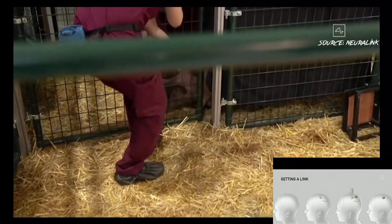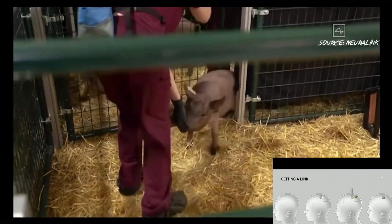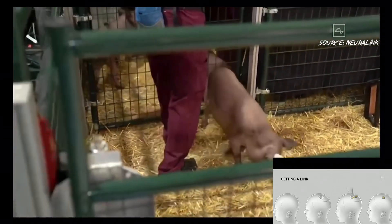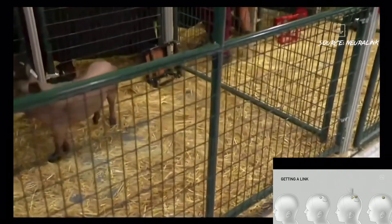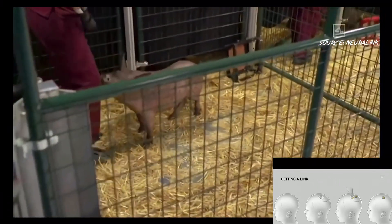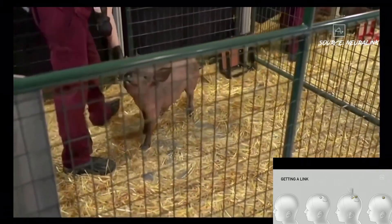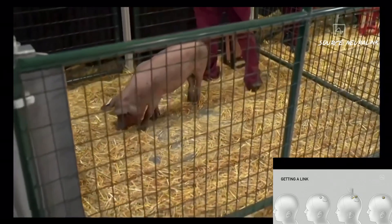We're able to show that you can actually have multiple Neuralinks implanted, and again, healthy and happy and indistinguishable from a normal pig. So it's possible to have multiple links in your head and have them all be sending out signals and working well.